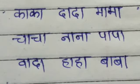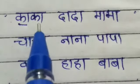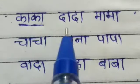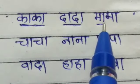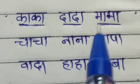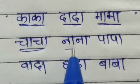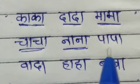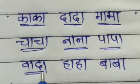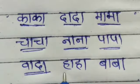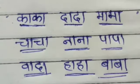Now let's learn some Kana words. Ka Kana Ka. Da Kana Da. Ma Kana Ma. Cha Kana Ca. Na Kana Na. Pa Kana Pa. Wa Kana Wa. Da Kana Da. Ha Kana Ha. Ba Kana Ba.